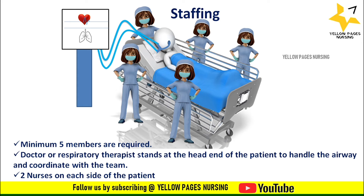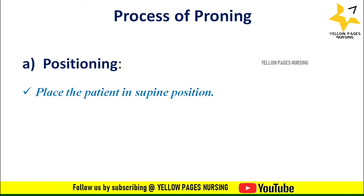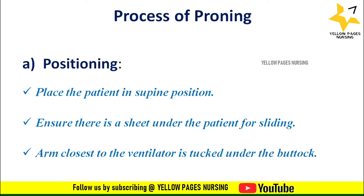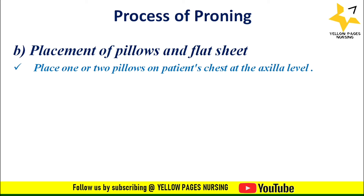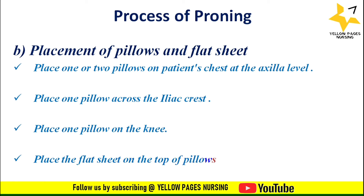Now let's discuss the process of proning. After pre-proning preparation, place the patient in the supine position, lower down the side rails, and remove the head-end attachment. Ensure there is a sheet under the patient for sliding. The arm closest to the ventilator is tucked under the buttock. Place one or two pillows on the patient's chest at the axilla level, one pillow across the iliac crest, and one pillow on the knee.